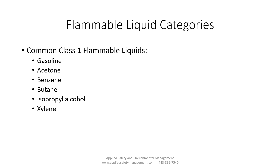Here are some common Class 1 flammable liquids found in the workplace: gasoline, which we use in everyday cars; acetone; benzene; butane; isopropyl alcohol; and xylene.